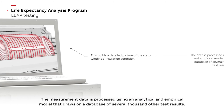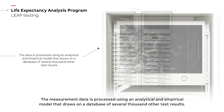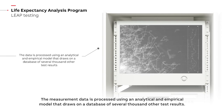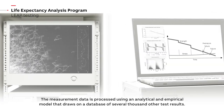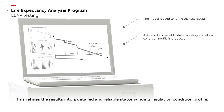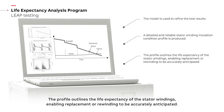The measurement data is processed using an analytical and empirical model that draws on a database of several thousand other test results. This refines the results into a detailed and reliable stator winding insulation condition profile. The profile outlines the life expectancy of the stator windings, enabling replacement or rewinding to be accurately anticipated.